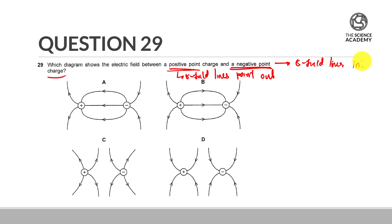The only diagram that agrees with this is going to be B. As you can see, the positive has E-field lines pointing out, and the negative has E-field lines pointing in towards it.